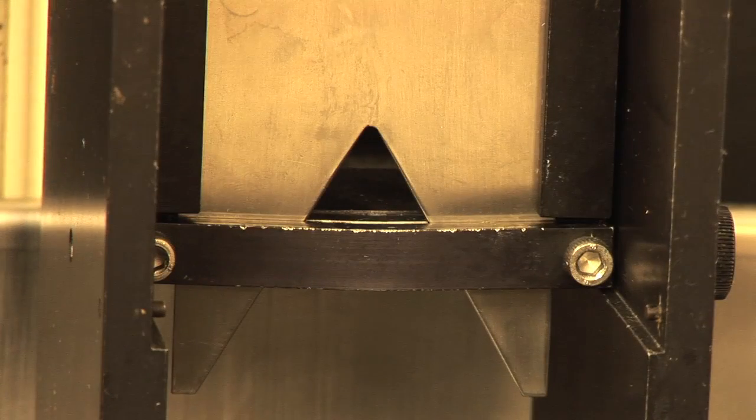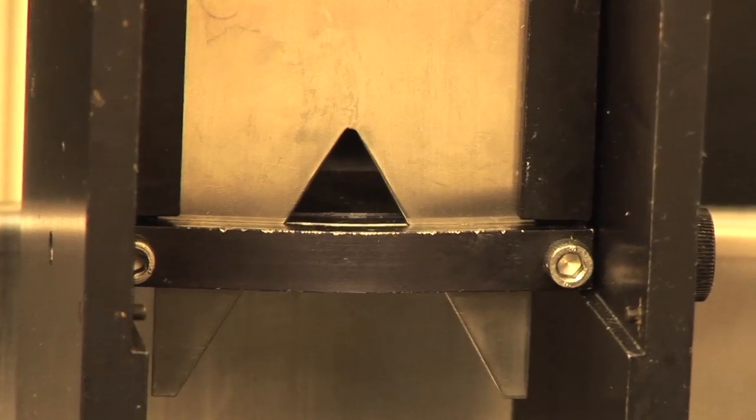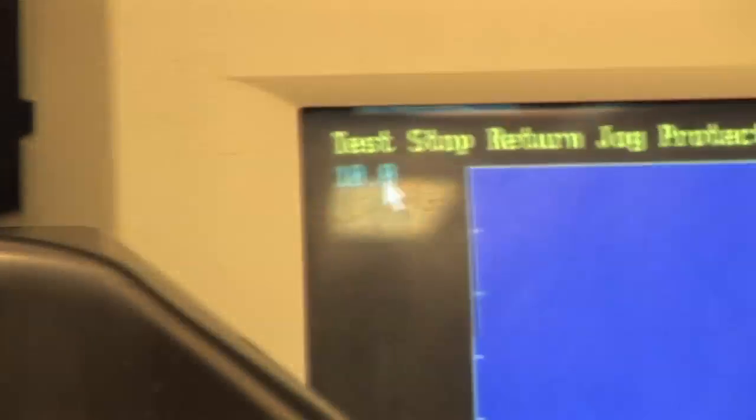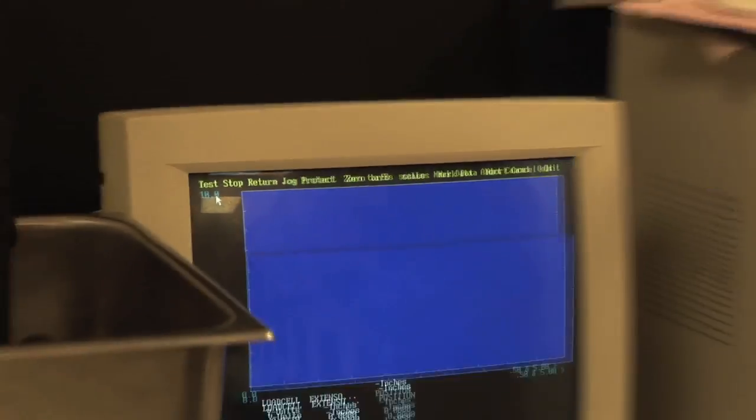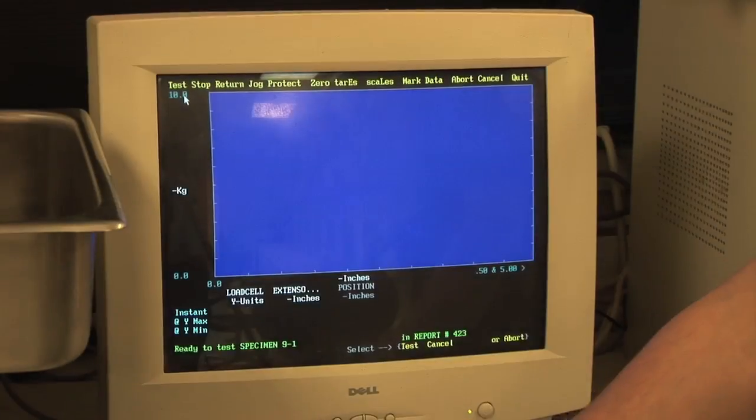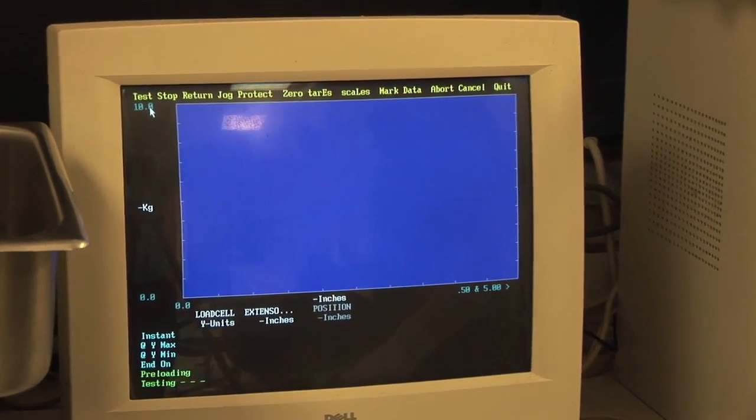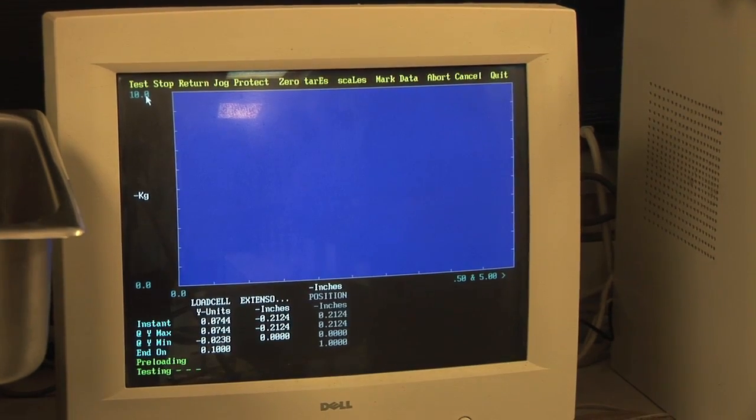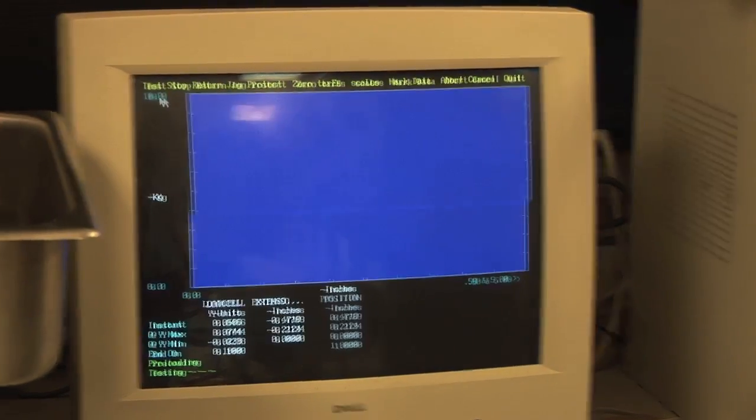So we have the machine set up ready, the distance we want it to be. We're going to go ahead and test it. You have to test it every 10 samples. So every 10 samples or every 60 cores. Hit T twice and the machine is going to go ahead and start coming down as if there was a sample there to cut through.